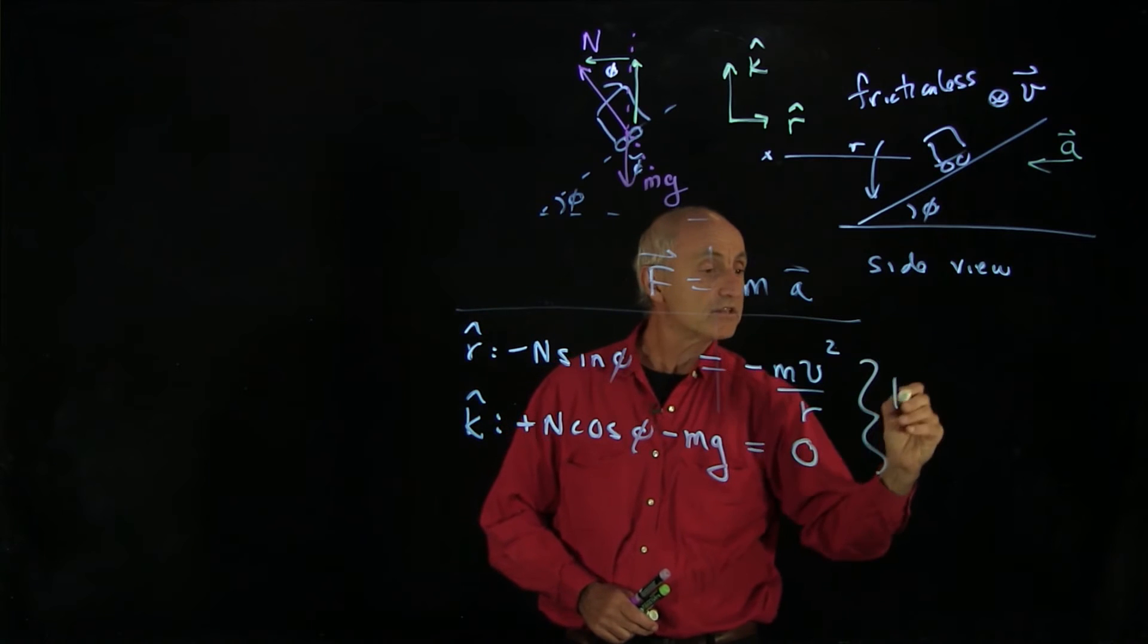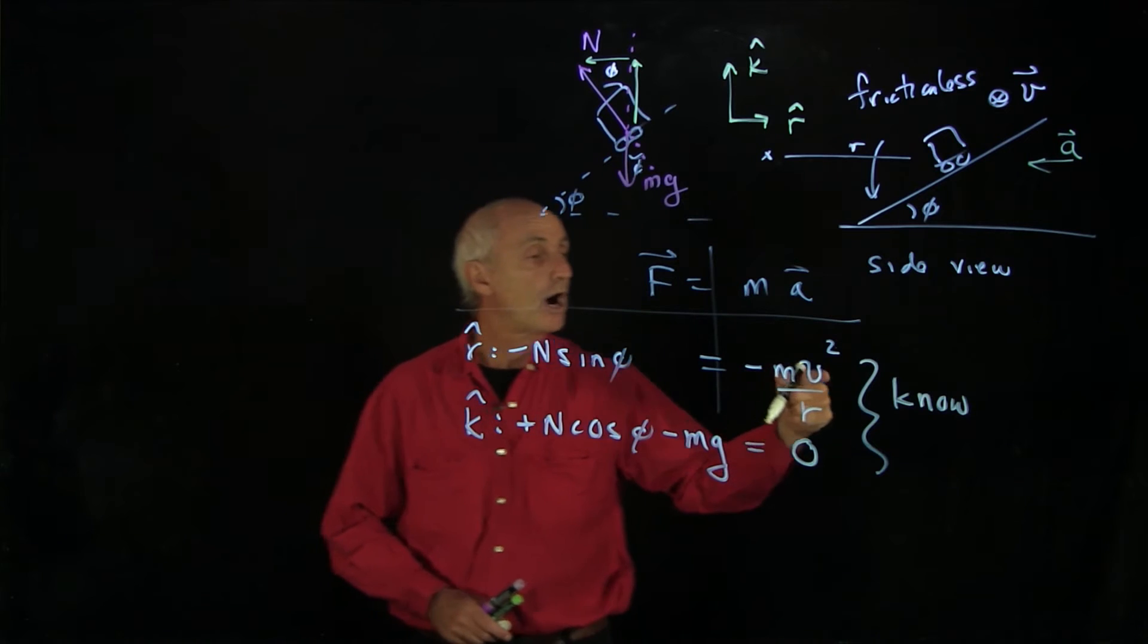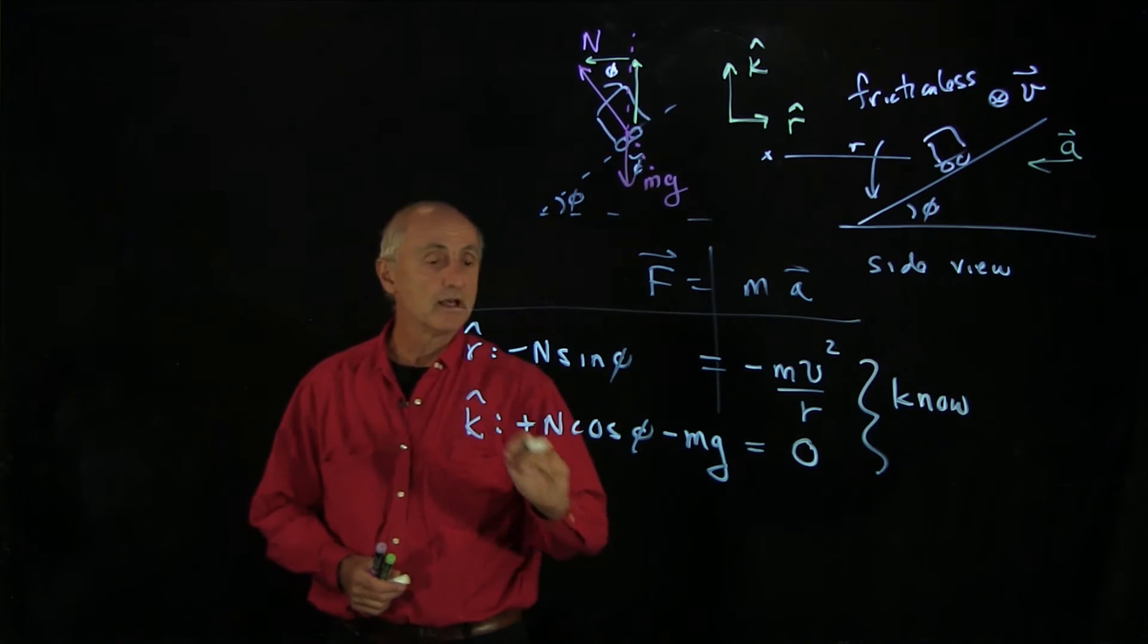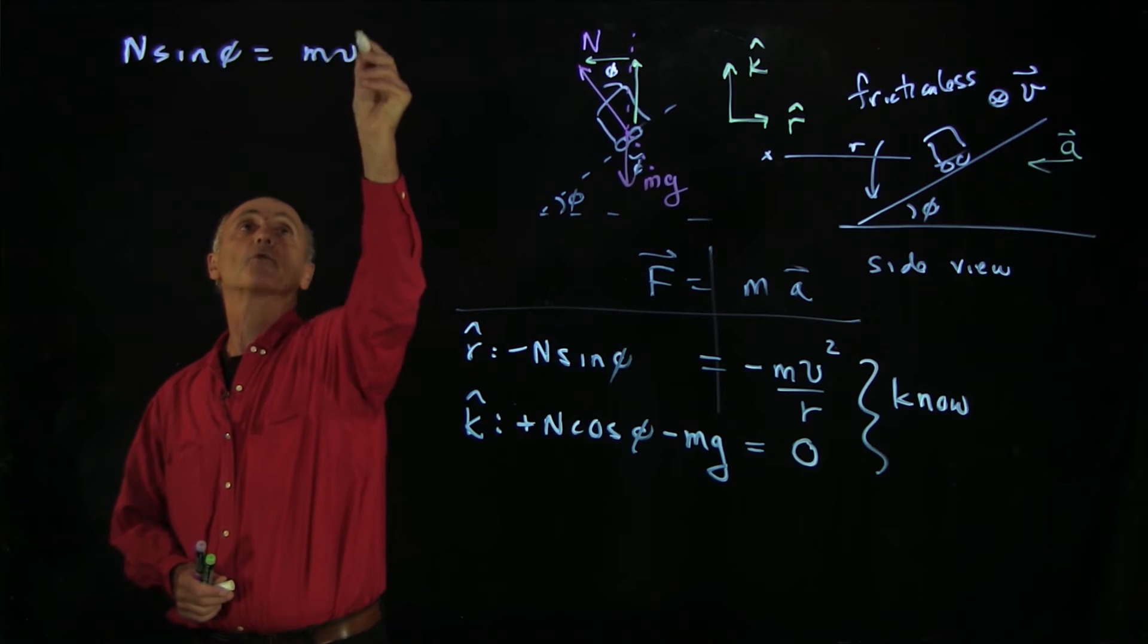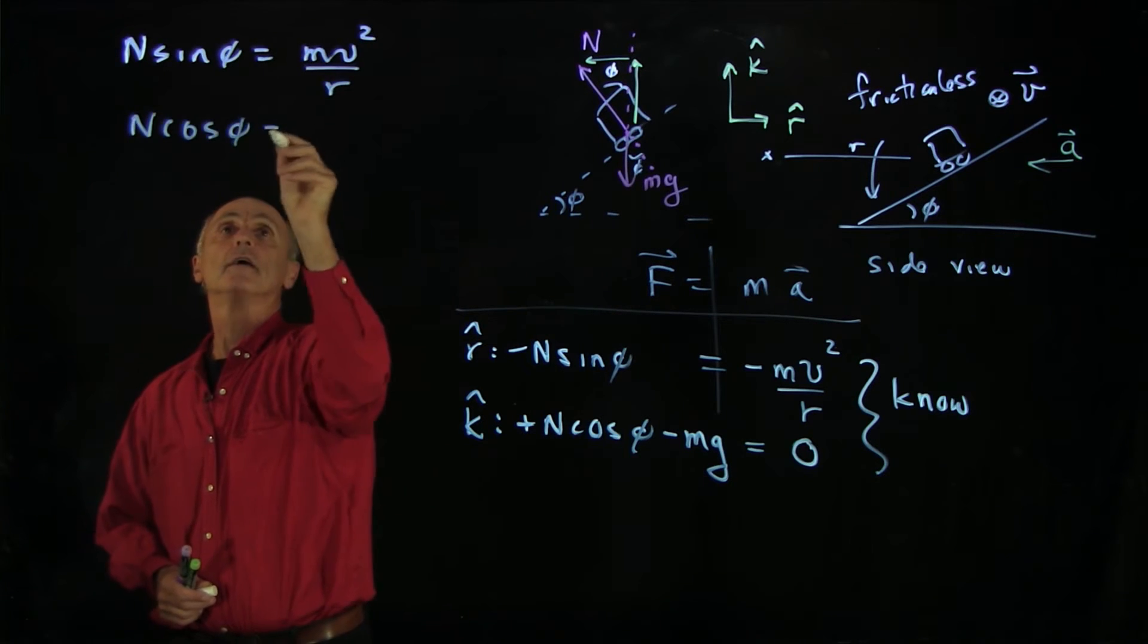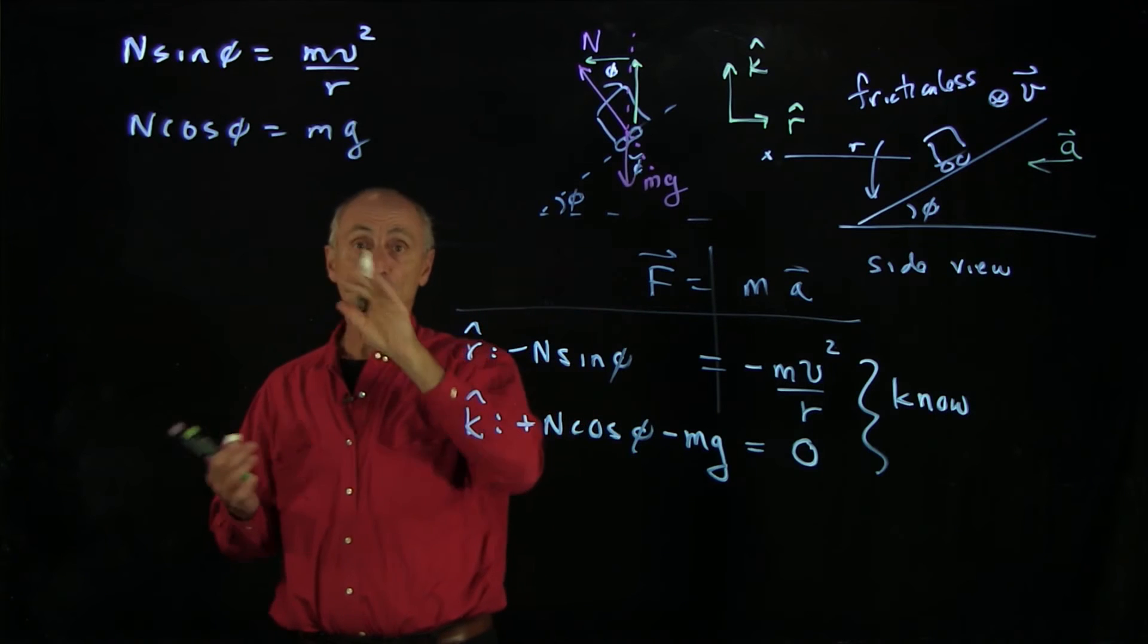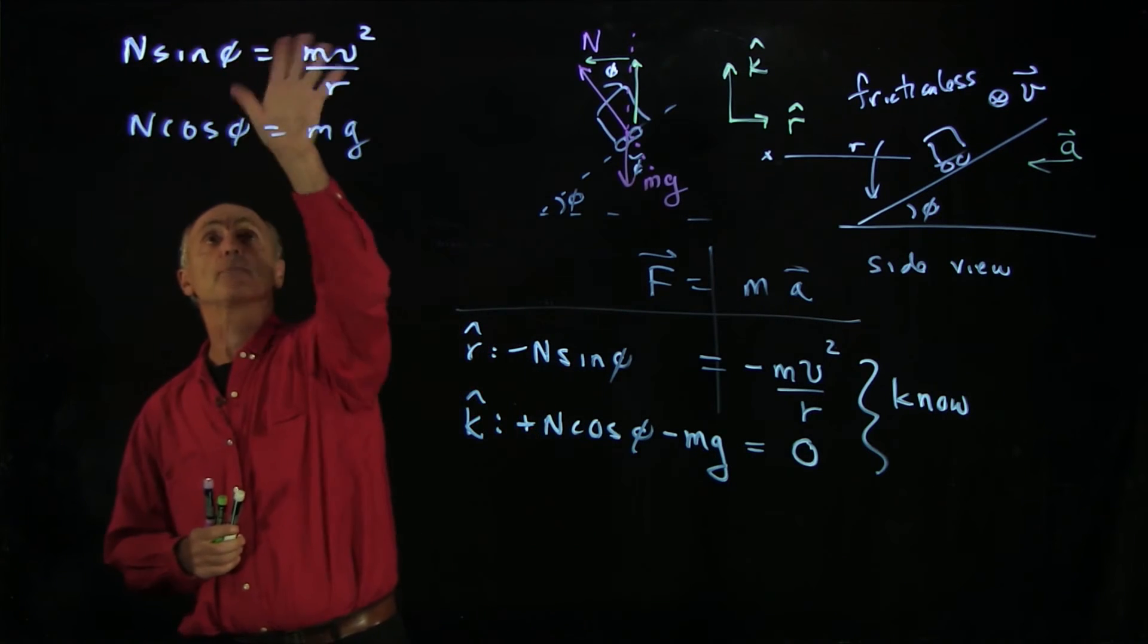In this problem, this is the side that we know, and we're trying to figure out the speed v. How do we analyze this problem? You can see that if I write my two equations as N sine phi equals mv squared over r and N cosine phi equals mg, we have two equations. We have two unknowns, v and n. Many times people just solve for n and substitute in, but you're also allowed to divide two equations.